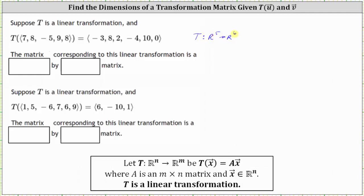Looking at our notes, if we have a transformation from R^N to R^M given by T of X equals A times X, then matrix A is an M by N matrix and all the vectors X are in R^N. So notice how when mapping from R^N to R^M, N is the number of columns in the transformation matrix.